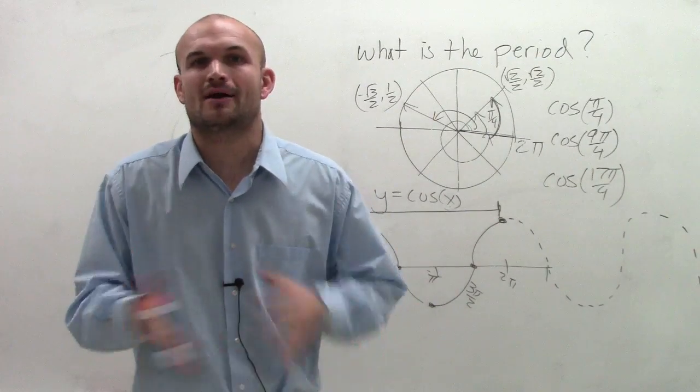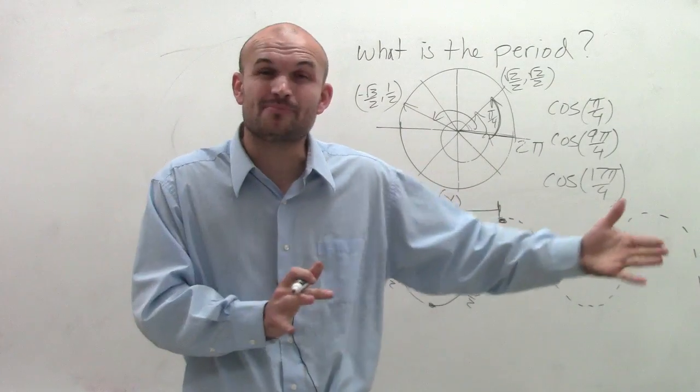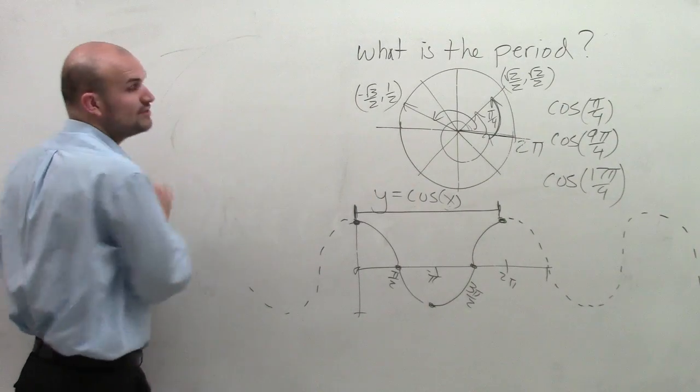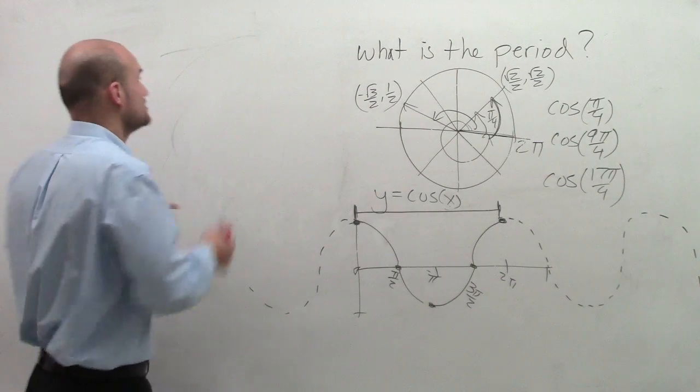Now, how do we figure that out? How do we always know? Is it always going to have the same period? Is it going to change? How do we know exactly what it's going to be? Well, to do that, we need to look at our standard form for each function.